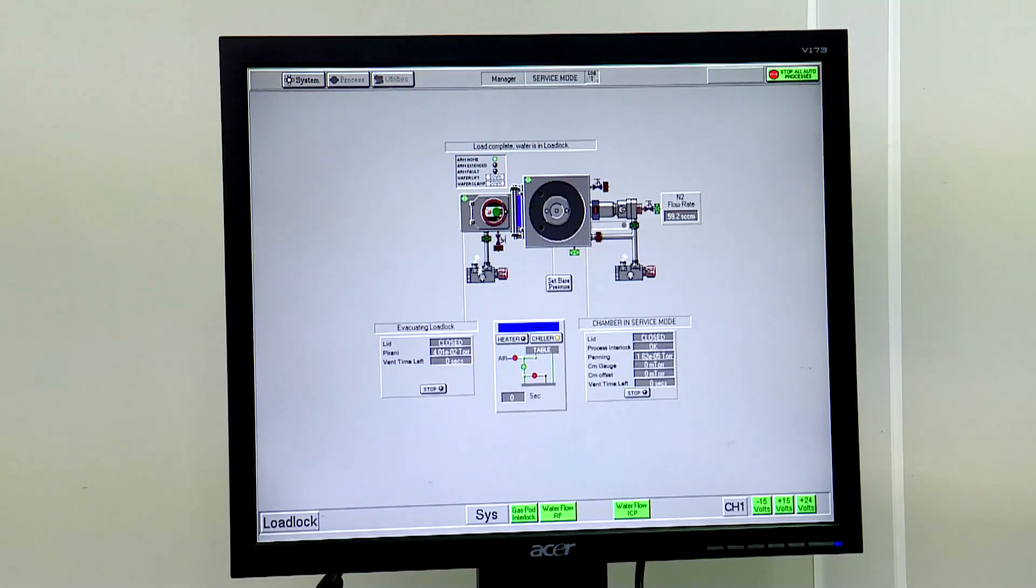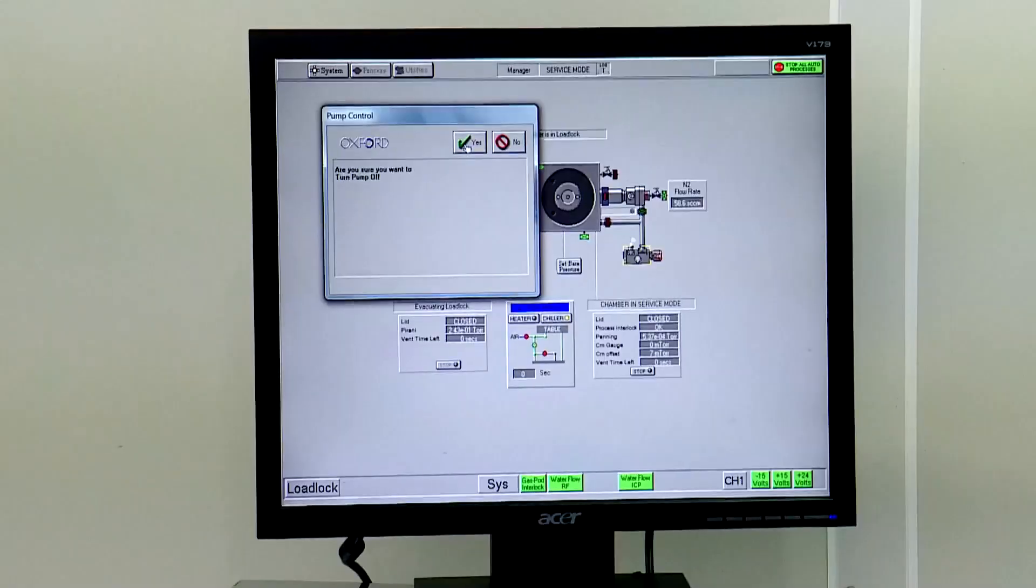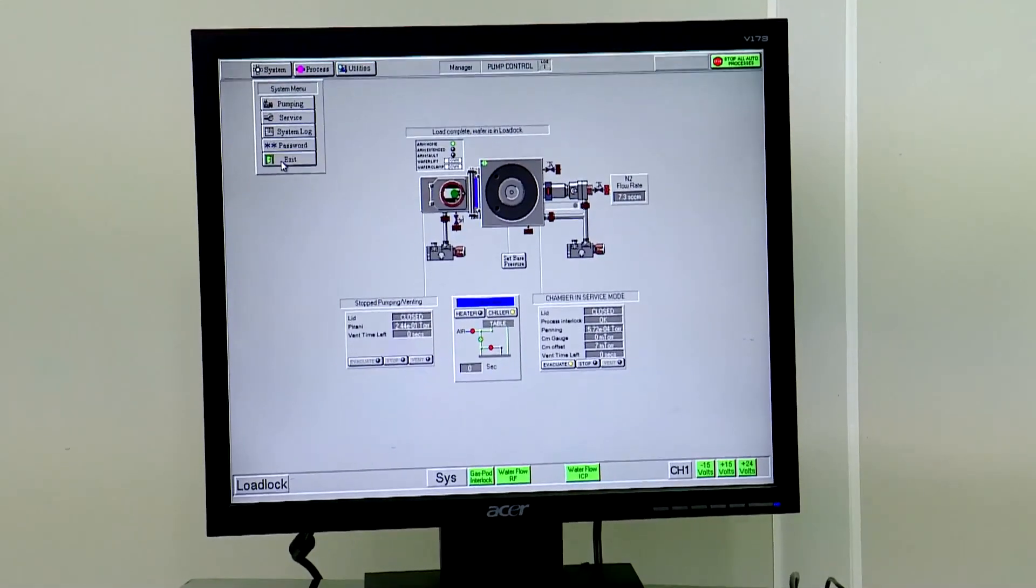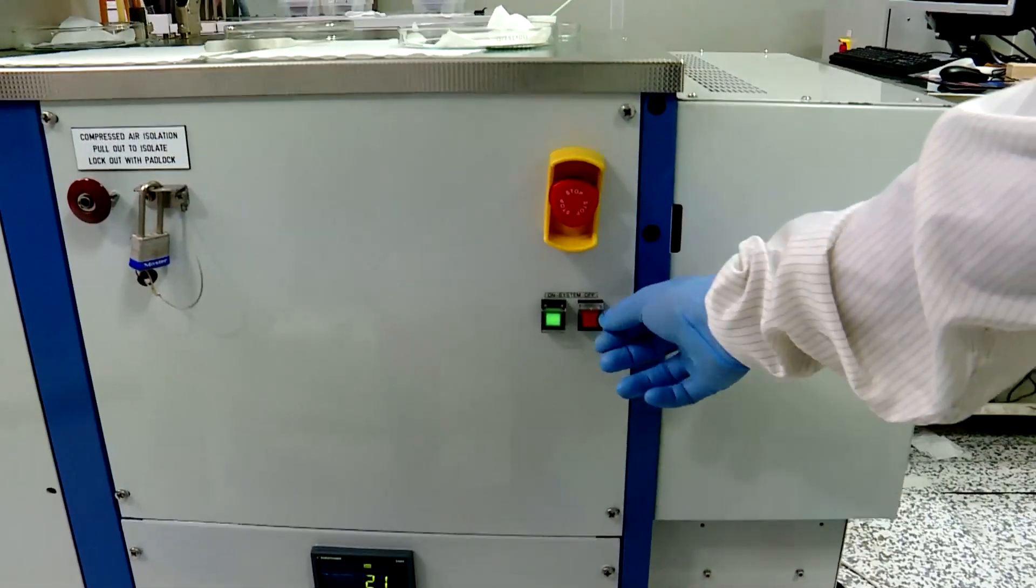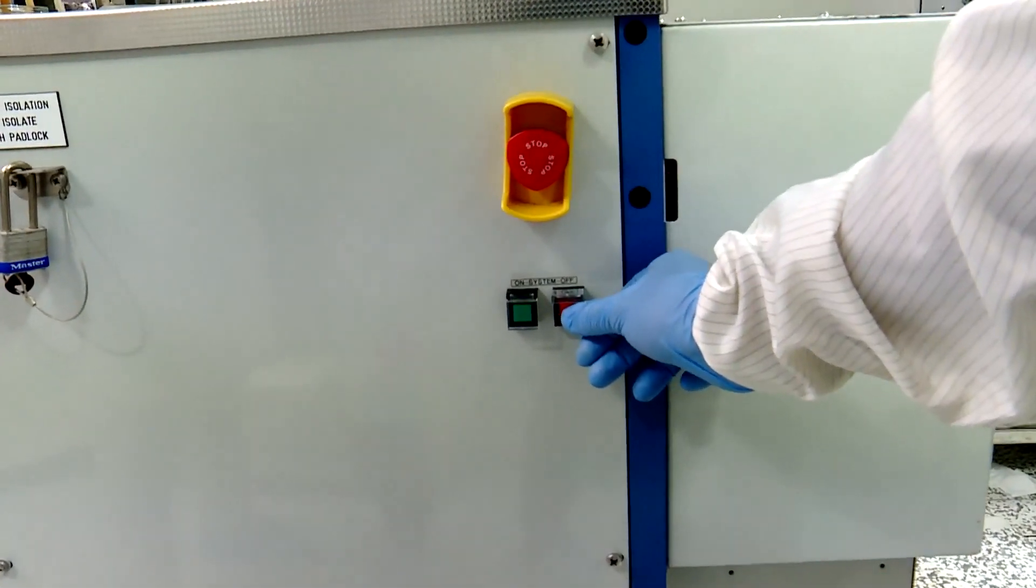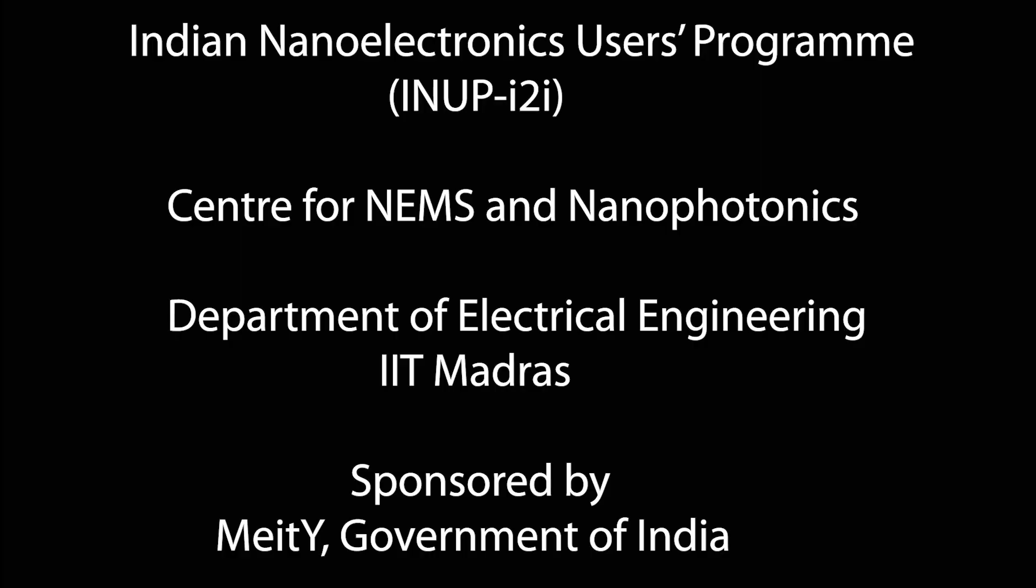Before switching off the system, all the pumps should be turned off. Exit the program and finally close the ICP-RIE.